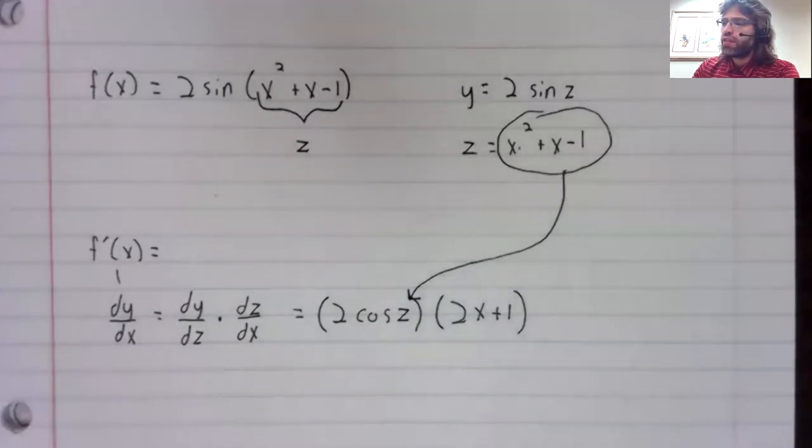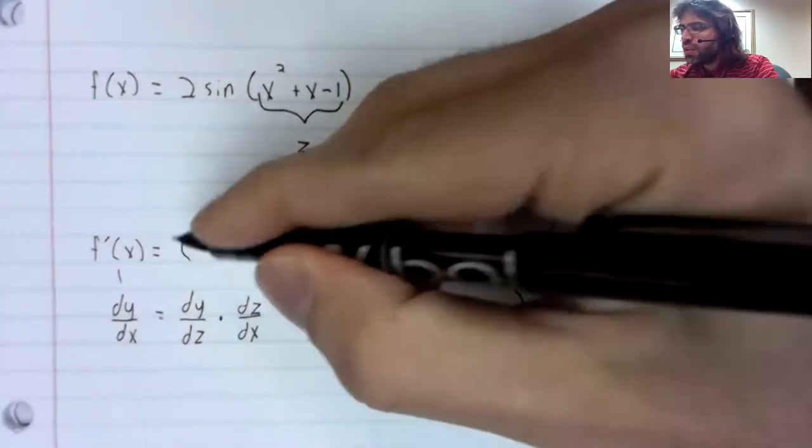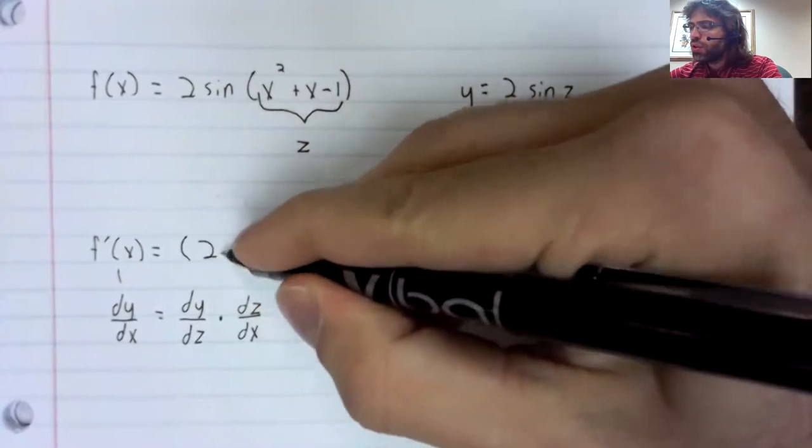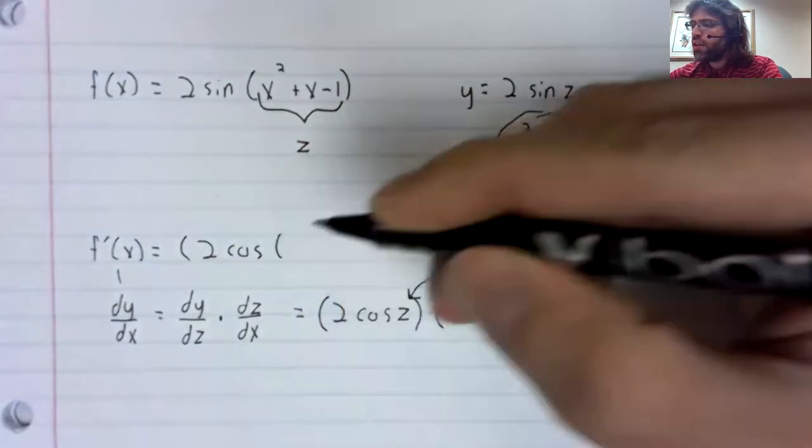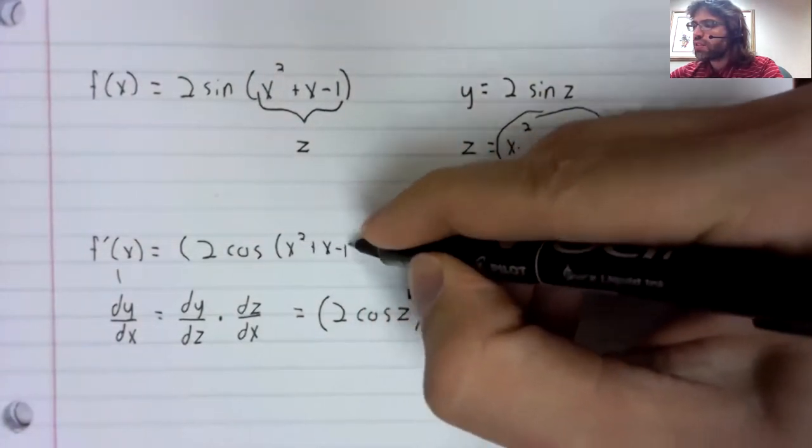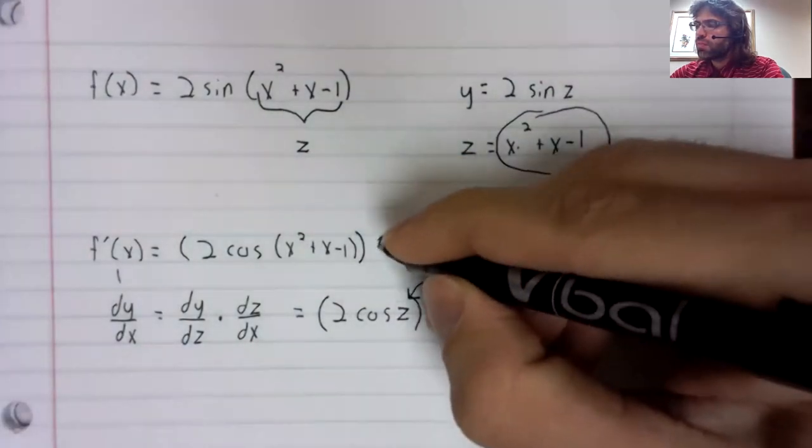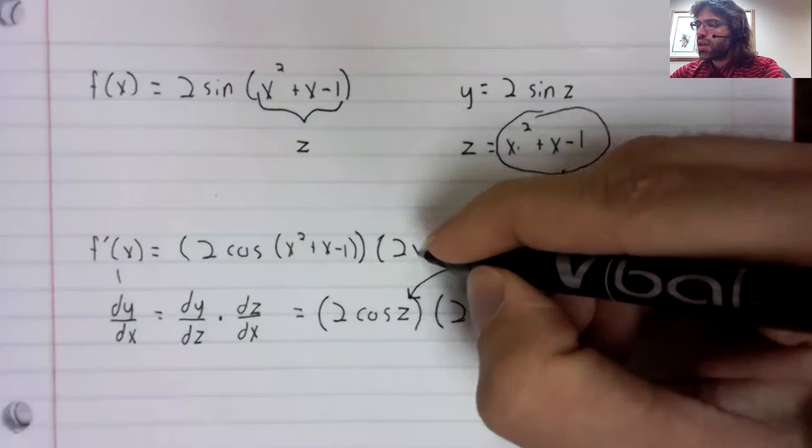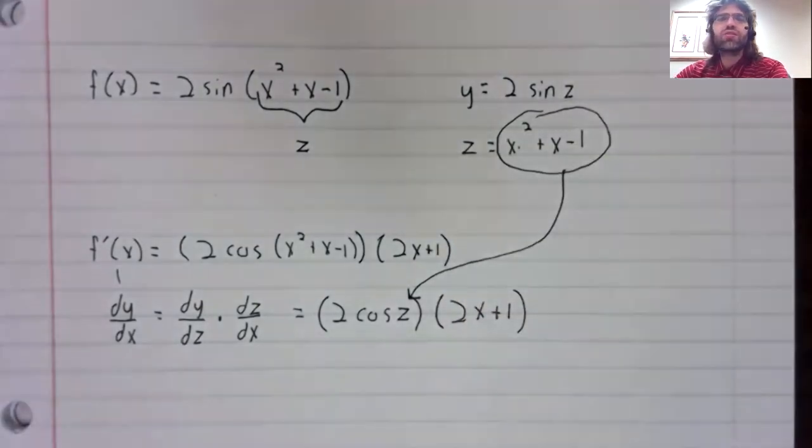The derivative we get then is two times cosine of x squared plus x minus one times 2x plus one.